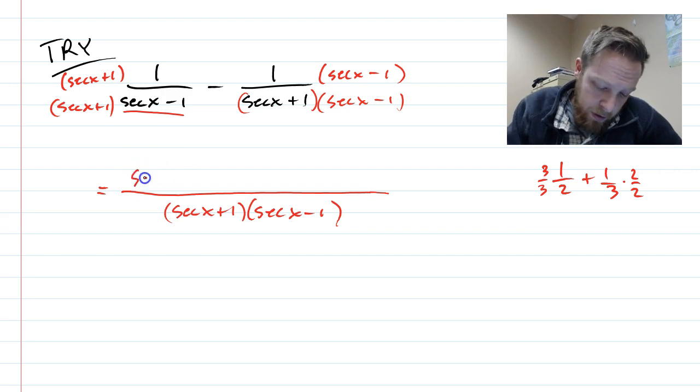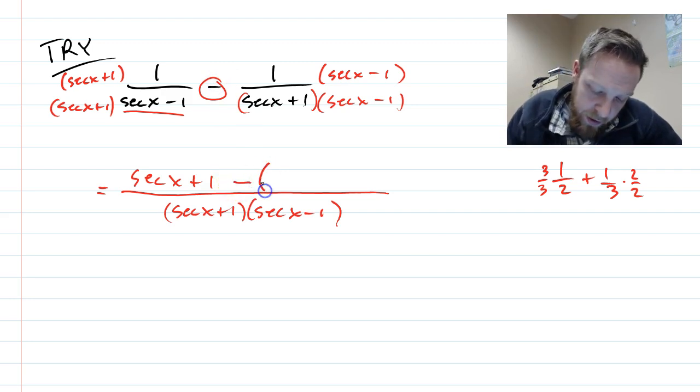Those two things. And then on top, it's going to be plus one. Now this minus is going to be going on everything here. So I'm going to put a minus and then a big parenthesis, secant x minus one.